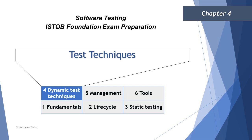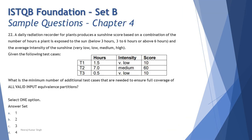The very first question of the day is question number 22. A daily radiation recorder for plants produces a sunshine score based on combination of the number of hours a plant is exposed to the sun, which has three categories: below 3 hours, 3 to 6 hours, and above 6 hours.